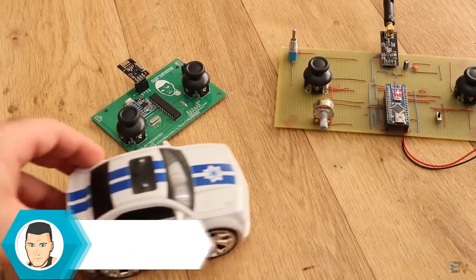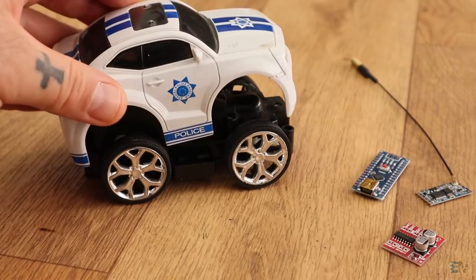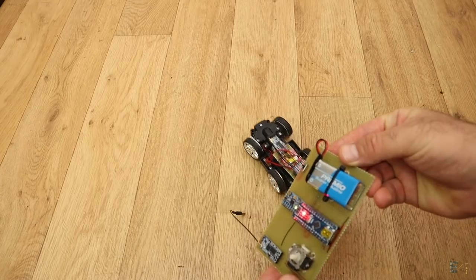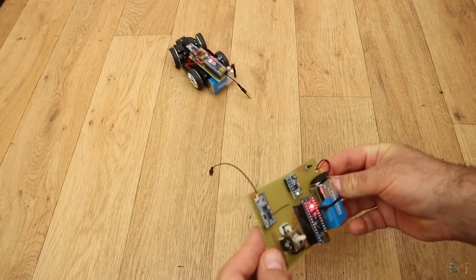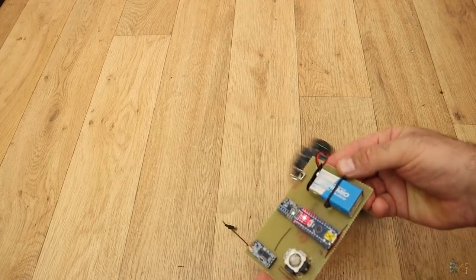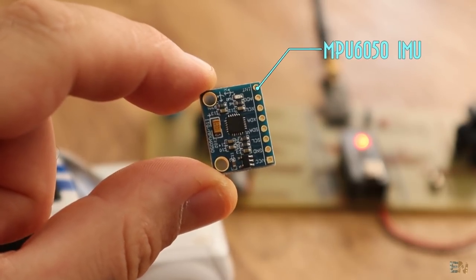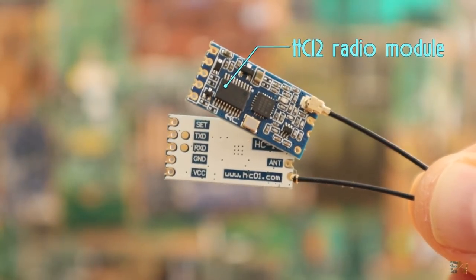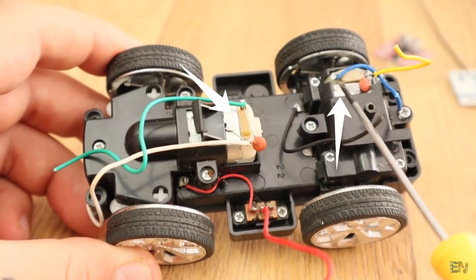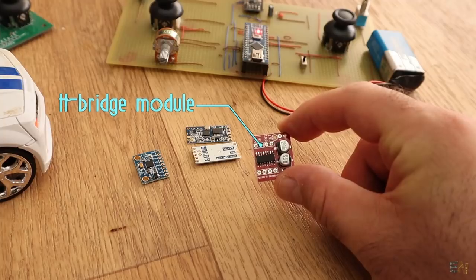Today I will use this old radio toy car that I had laying around as an example and I will create an IMU radio controller and be able to move the car around just by rotating the controller. I will show you how to read the IMU data, how to use the HC-12 radio module and create the connection, send the data and control two DC motors using an Arduino and an H-Bridge.